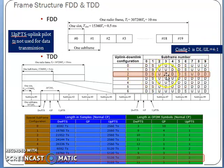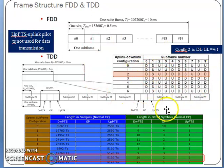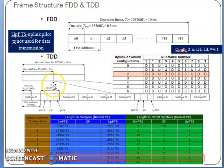In TDD, the DL/UL ratio can be configured — for example, 4:1 means four downlink subframes and one uplink subframe. If you want to increase uplink speed, you can use a configuration like 3:2 — three downlink and two uplink subframes. Depending on your user requirements, you can configure the DL/UL ratio accordingly.